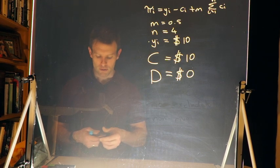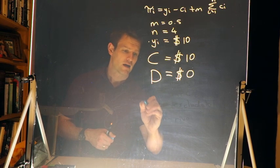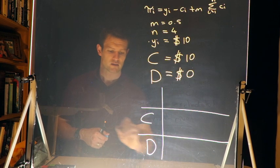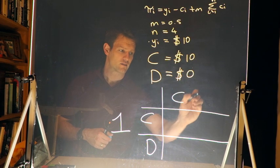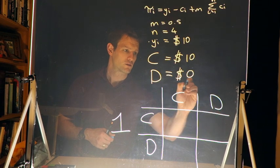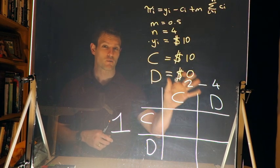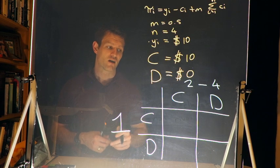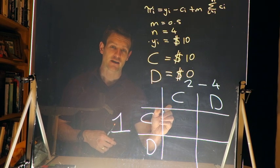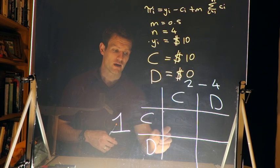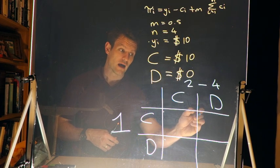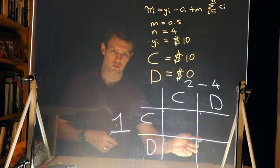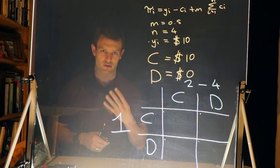We're going to structure this as a payoff table for me as player one, playing against players two through four. We'll summarize players two through four's actions and consider four potential outcomes: I contribute when everyone else contributes; I do not contribute when everyone else contributes; I contribute when no one else contributes; and I don't contribute when no one else contributes.